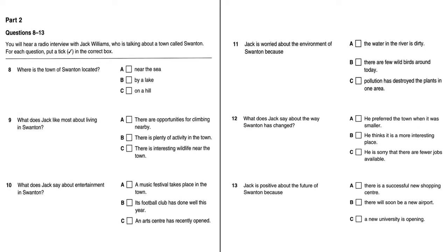Now we are ready to start. Listen carefully. You will hear the recording twice. What a wonderful view. I'm here with Jack Williams, who's telling me about his hometown of Swanton. Yes, the top of this hill is the best place to see the area. Swanton is on the coast. You can see the harbour from here, but in fact the town is built along the River Dean. This river comes from a lake in the mountains, then flows down to the flatland below where the town is built. What do you most like about living here? It's an important industrial town and a port, so there's lots of activity. And there's a forest behind the town with interesting wildlife. But the most exciting thing for me is the mountains. I go climbing whenever I get the chance.